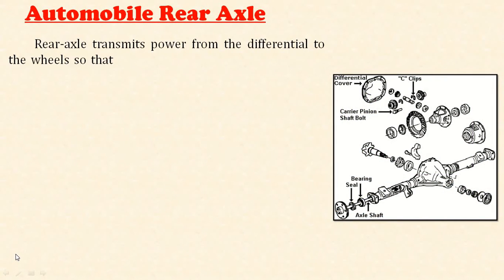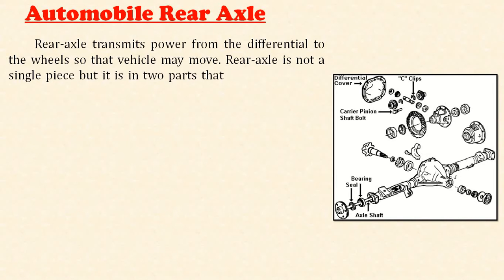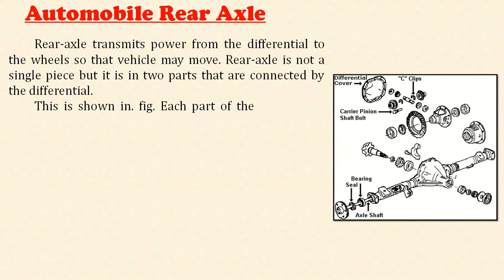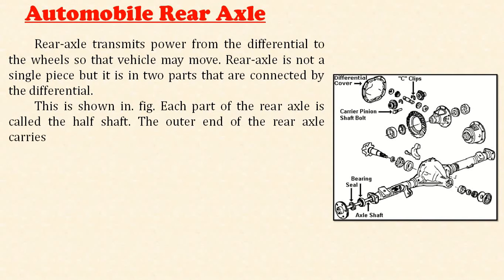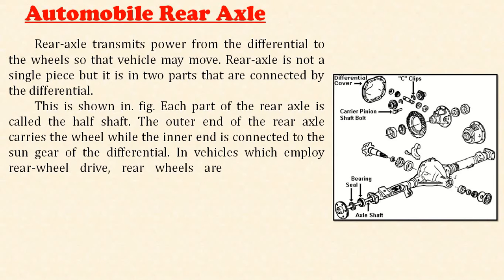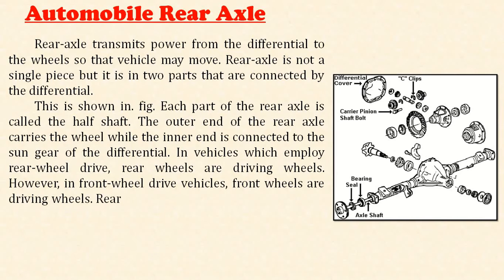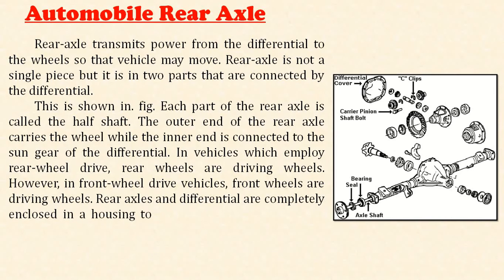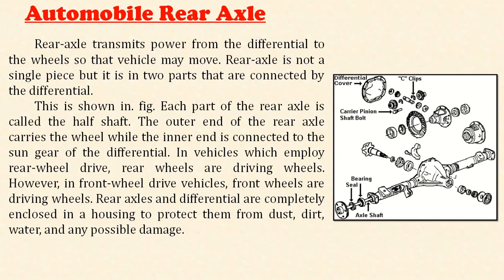The automobile rear axle transmits power from the differential to the wheels so that the vehicle may move. The rear axle is not a single piece but is in two parts that are connected to the differential, as shown in the figure. Each part of the rear axle is called a half shaft. The outer end carries the wheel while the inner end is connected to the sun gear of the differential.